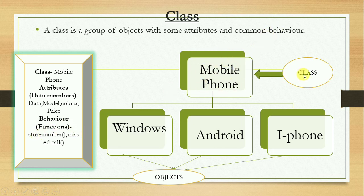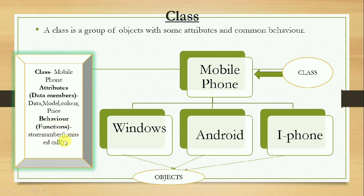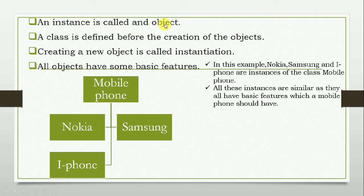Here we have a class mobile phone, and it consists of different objects like Windows, Android, and iPhone — these three are types of mobile phones. The name of the class is mobile phone. It has some data members or attributes like model, color, and price. The behavior of a mobile phone — represented as functions in Python — includes storing numbers or having missed call information.